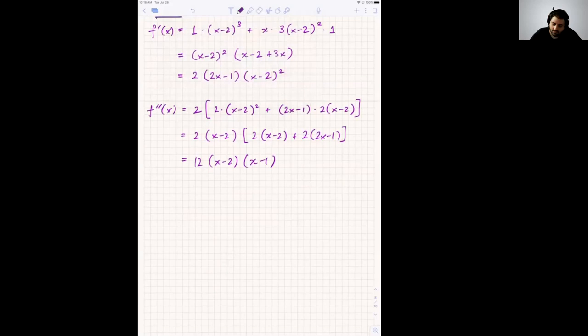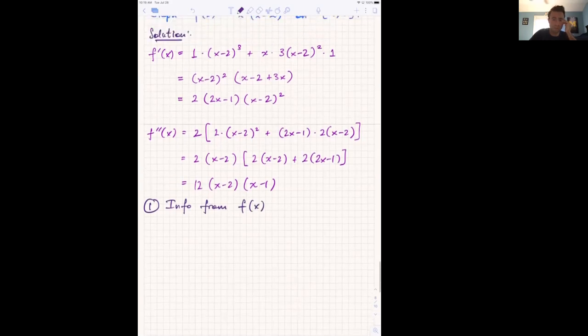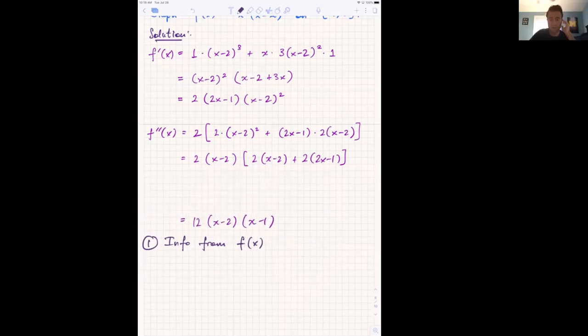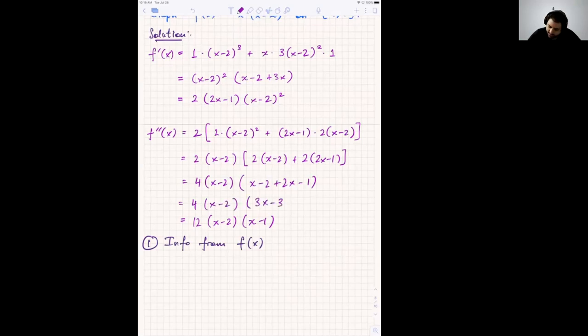Alright, so now let's go through each function: f, f', and f'', and get what we're supposed to get, right? All the info that we need. Should the last line of the second derivative be 2x-1? Let me check. That should be x-1. Let's just double check that. So let's see, 2 times (x-2), now there's also another factor of 2, so 4. And I'm still left with (x-2), I factored out the 2, plus (2x-1). And let's see, I guess I'm going to get a factor of 3 here. 3x-3. And then I factored another 3, and I get the (x-1). Gotcha. Thank you. You're welcome.